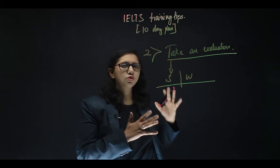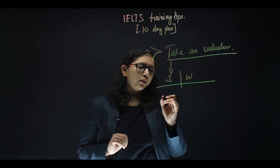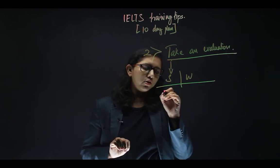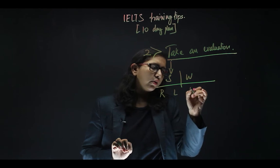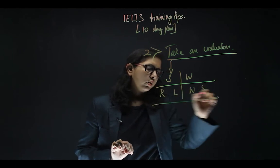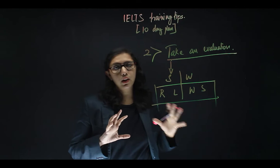Once you know which sections you are able to do quite easily and sections that you're lagging behind in—say, for example, your strengths are reading and listening, but your weaknesses are writing and speaking—once you know the sections that you need to work on, you are going to create a study plan.